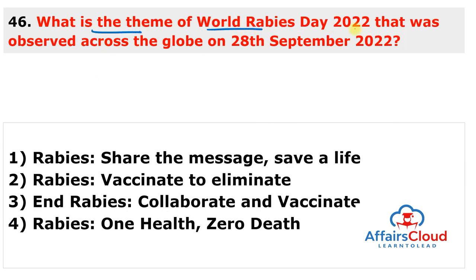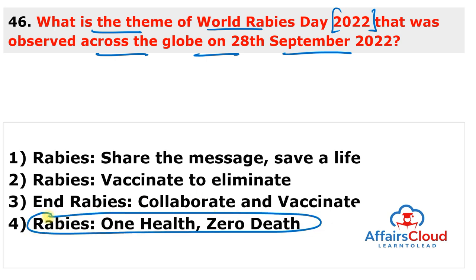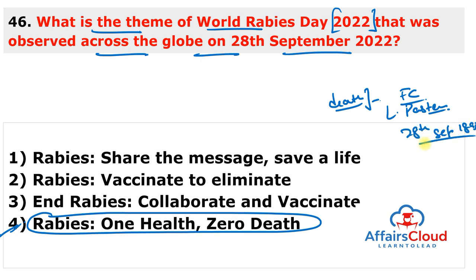World Rabies Day 2022 was observed on 28th September 2022 with the theme 'Rabies: One Health, Zero Deaths.' The day marks the death anniversary of famous French chemist and microbiologist Louis Pasteur, who died on 28th September 1895. The first World Rabies Day was observed in 2007, making this the 16th World Rabies Day.